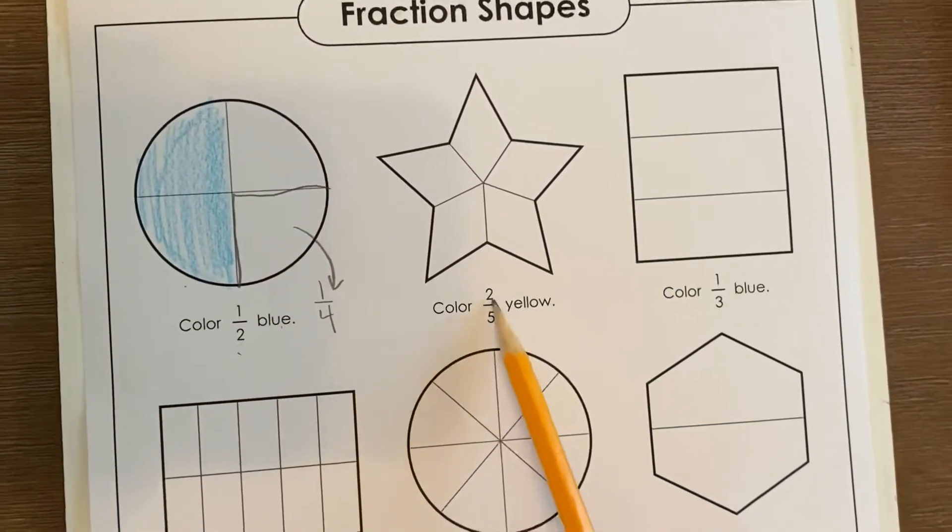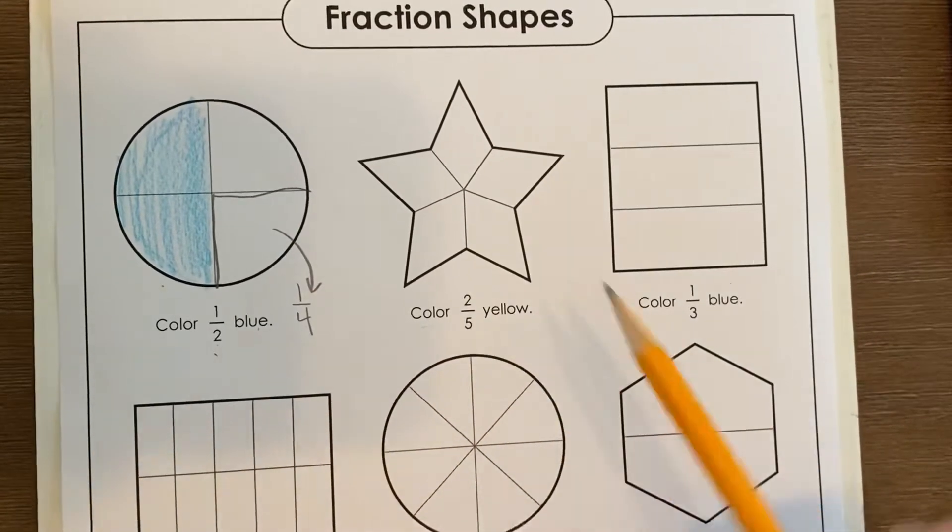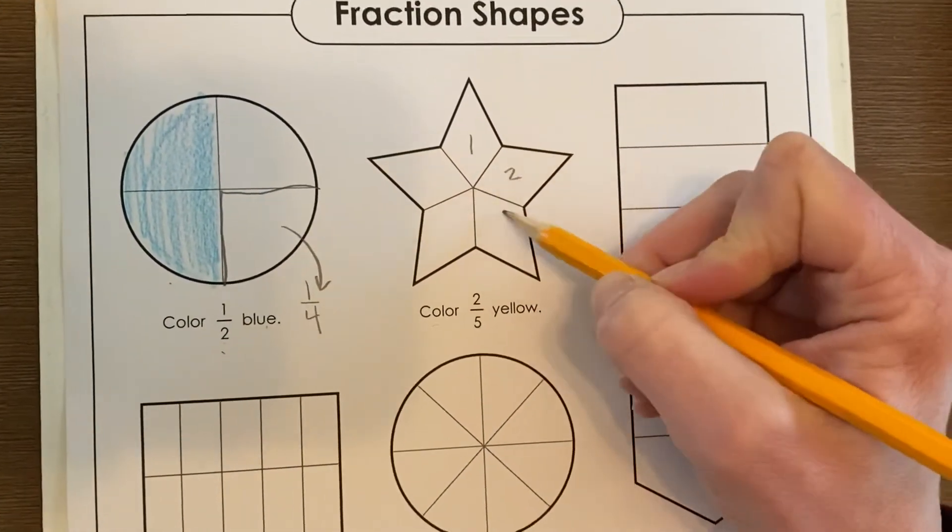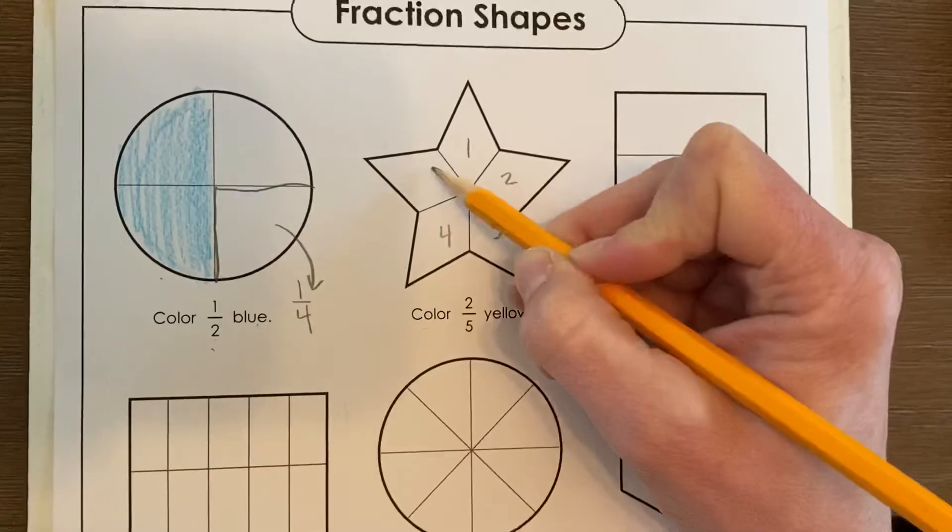This says color two-fifths yellow. Let's see if they tried to trick us. One, two, three, four, five.